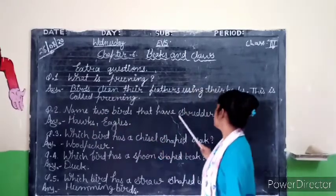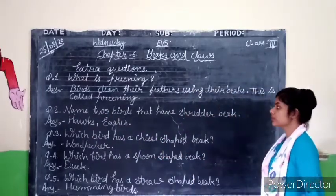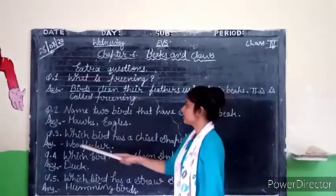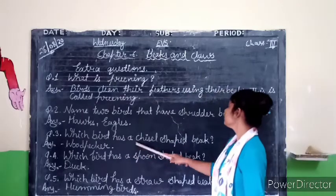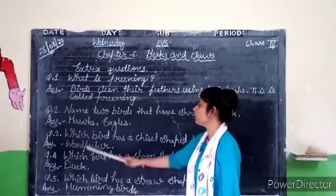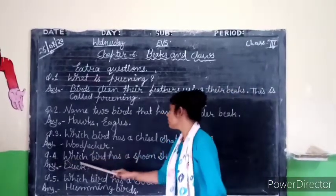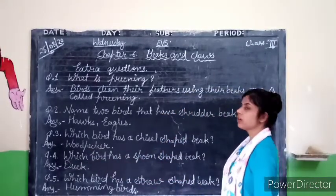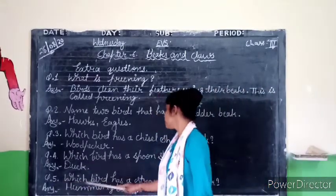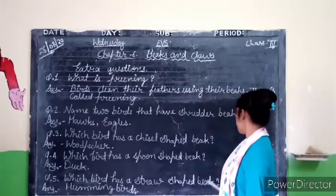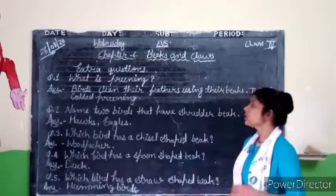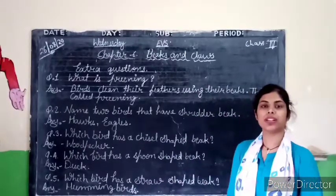Question 2: name the bird that have Cinderella hills. Which bird has the chisel-shaped beak? Woodpecker. Which bird has a spoon-shaped beak? Duck. Which bird has a straw-shaped beak? Hummingbird. These issues are easy to note but not easy to handle.